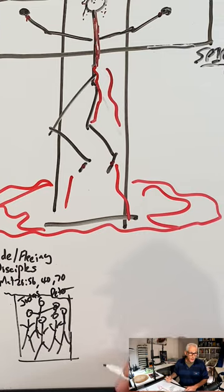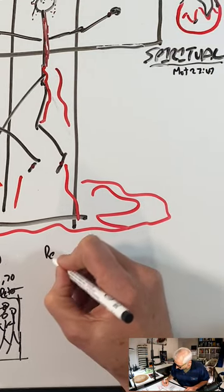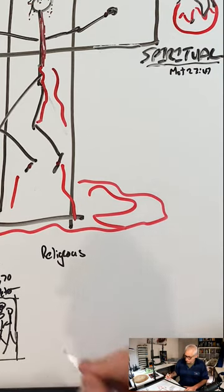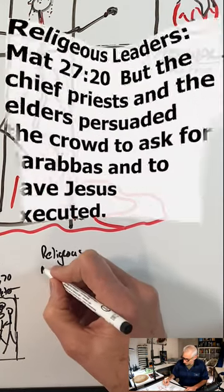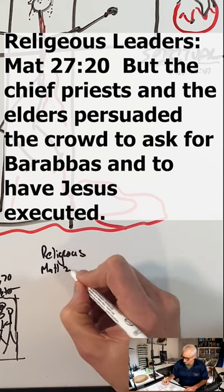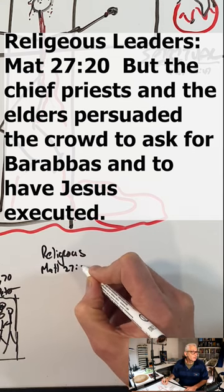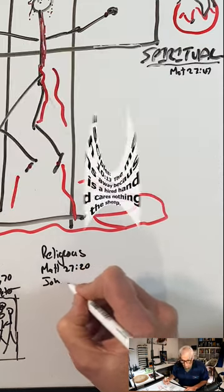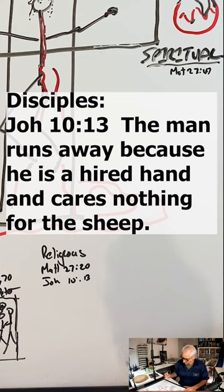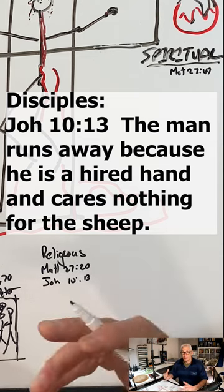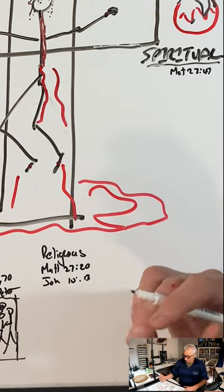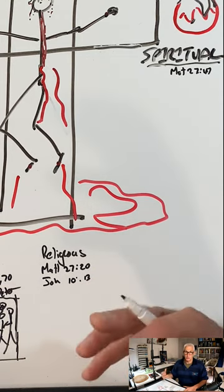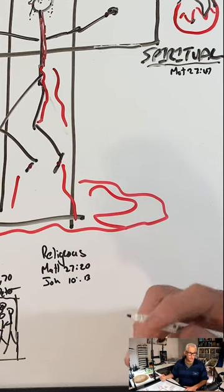Then we have the religious. We can read of the religious in Matthew chapter 27, verse 20, but also in John 10:13. And we know that the Pharisees handed him over and all self-righteous, yet also contributing to the crucifixion of Jesus.